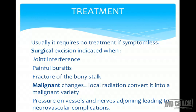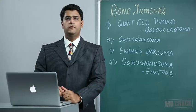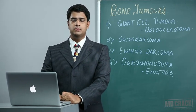Surgical excision is indicated when there is joint interference preventing full flexion-extension, painful bursitis, fracture of the bone stalk, malignant changes (local radiation can convert it to malignant variety), or neurovascular complications from pressure on adjacent vessels and nerves. This brings us to the end of the important topic of bone tumors. Thank you so much.